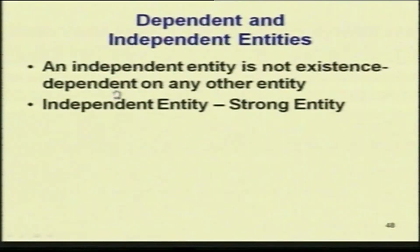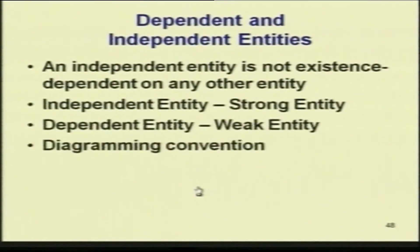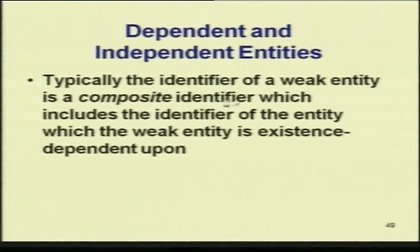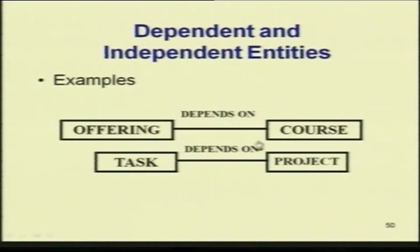This independent entity is called the strong entity and the entity which depends on the independent entity is called the weak entity. For example, the entity offering depends on the course, and the task depends on the project. So offering and task are weak entities, while course and project are strong entities.